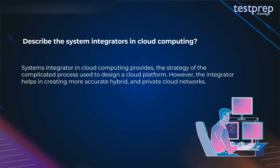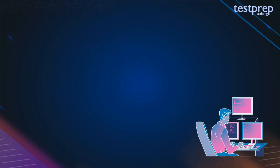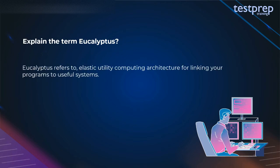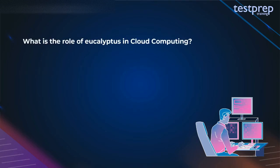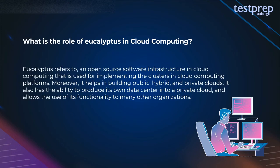Question 23: Describe the system integrators in cloud computing. A systems integrator in cloud computing provides the strategy for the complicated process used to design a cloud platform. The integrator helps in creating more accurate hybrid and private cloud networks. Question 24: Explain the term Eucalyptus. Eucalyptus refers to Elastic Utility Computing Architecture for Linking Your Programs to Useful Systems.